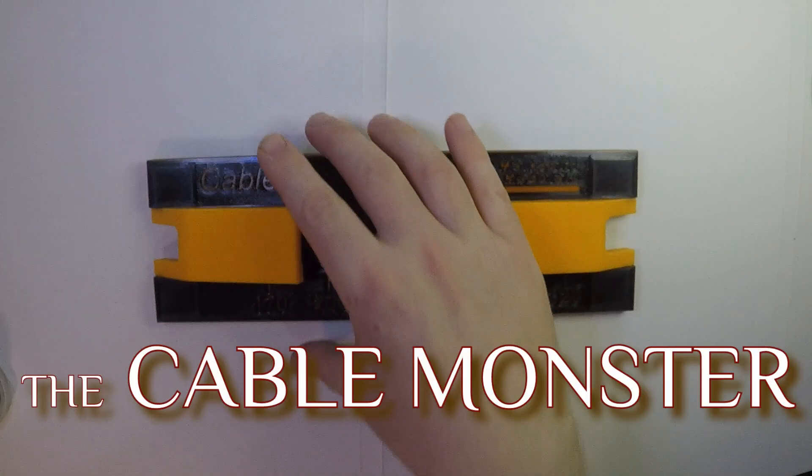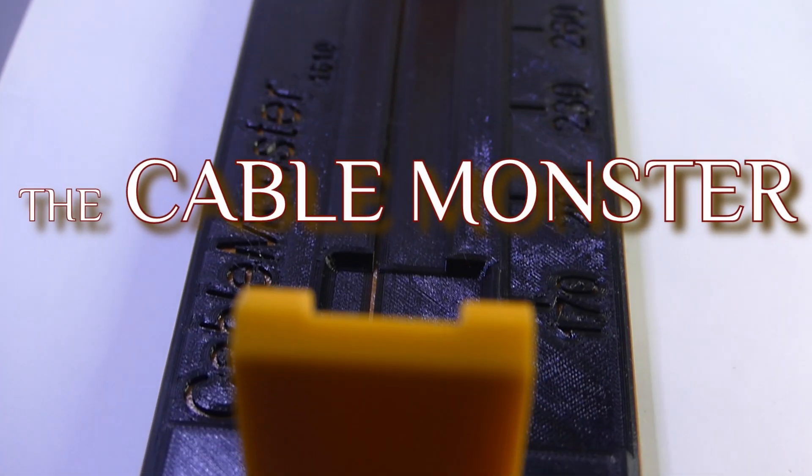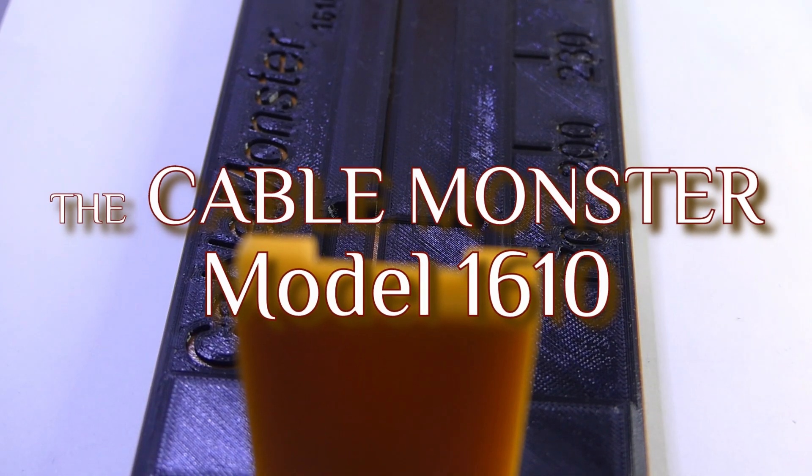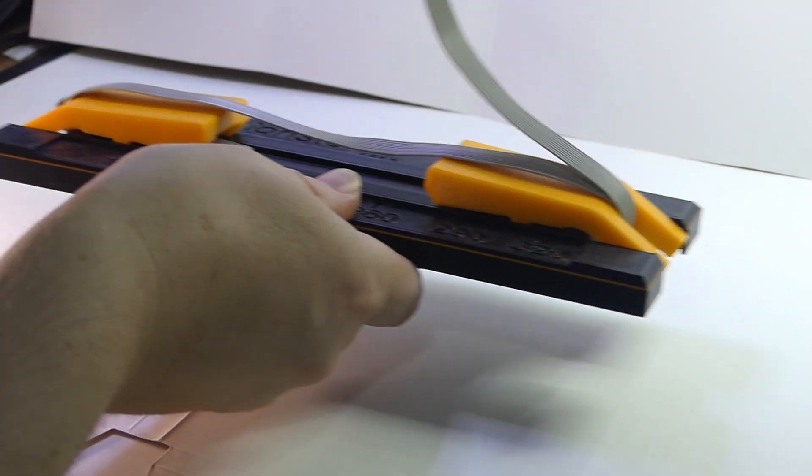So I decided to do something about this. The CableMonster model 1610 is a device for making power cables for modular synthesizers, such as the Eurorack format.